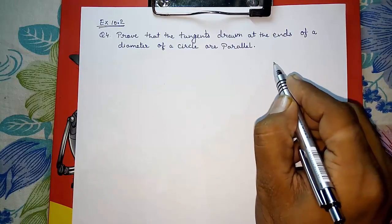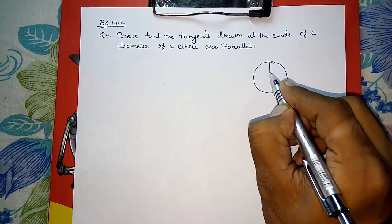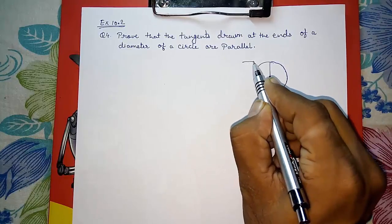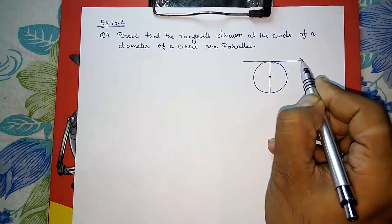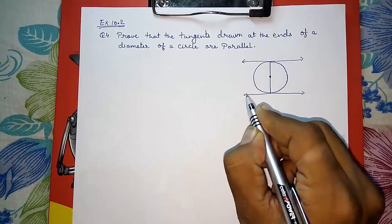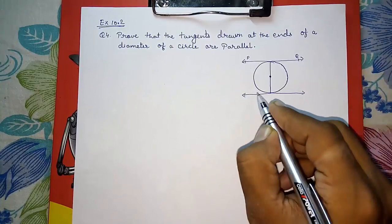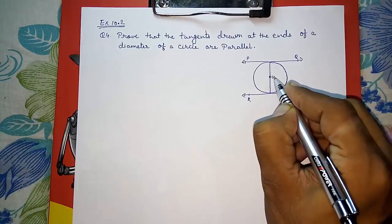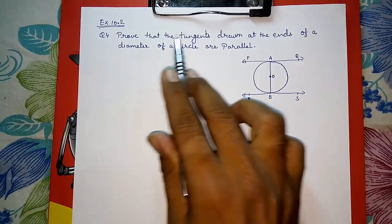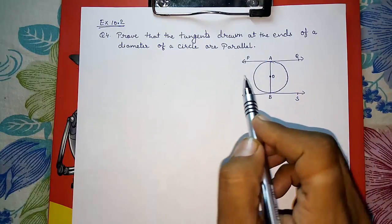I am drawing a circle with its diameter, and I have to draw two tangents from the endpoints of the diameter. I am naming this line as PQ and the other as RS. The center point is O, and the endpoints of the diameter are A and B.